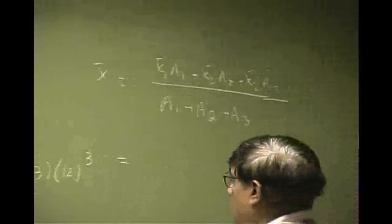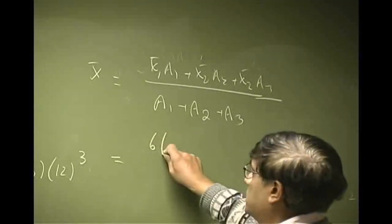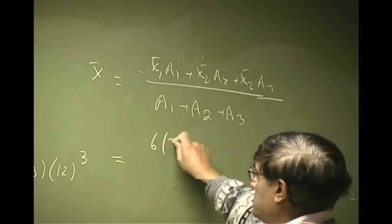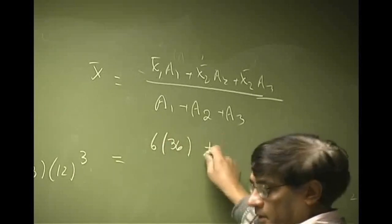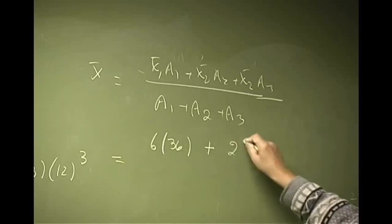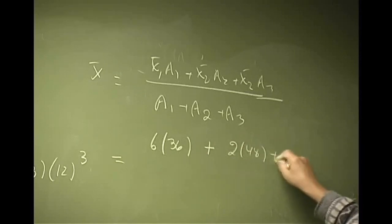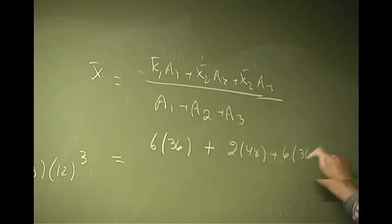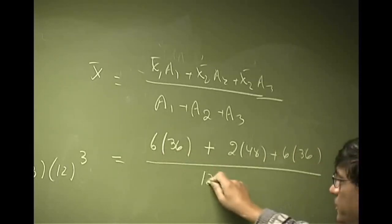So you're looking at 6 times 36 itself, plus you have 2, then you have 48, then you have another 6 and 36. The area we just found was 120.